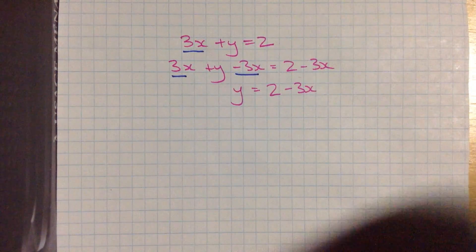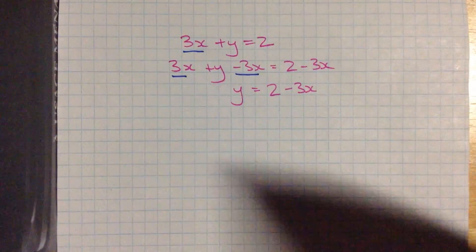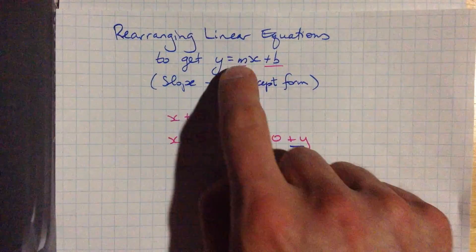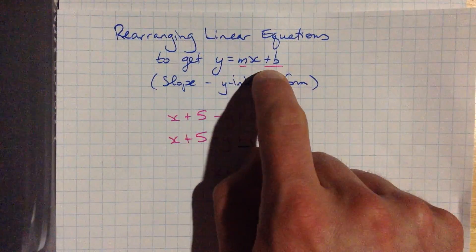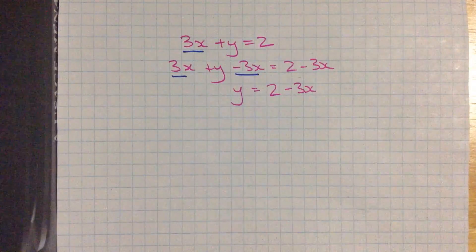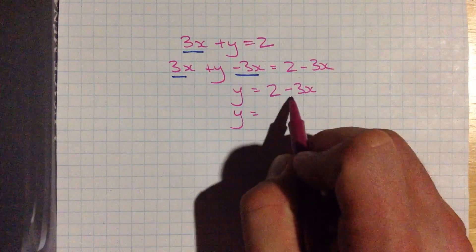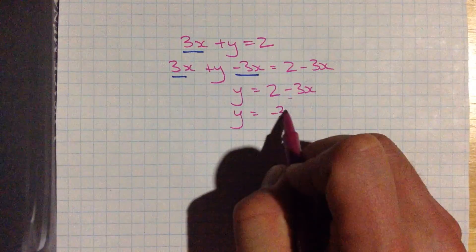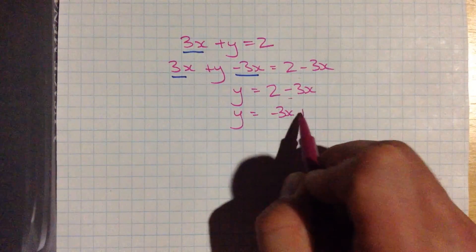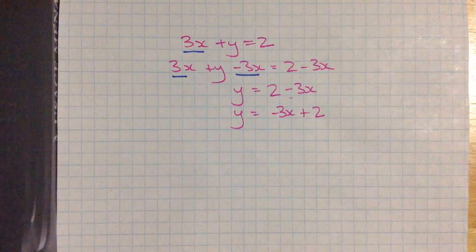Although we often want that slope y-intercept form with the x value first and then that b y-intercept value second. So let's just rewrite this one more time. This negative 3x we're going to put in the front. And that's a plus 2, a positive 2 that we write just after it.